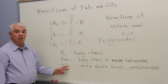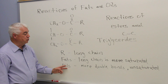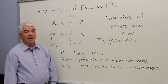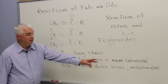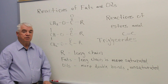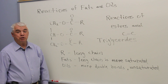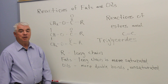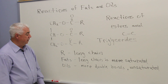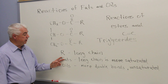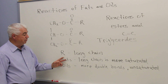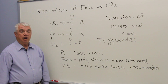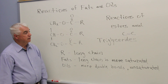Oils, of course, are liquids at room temperature. They have more double bonds — more unsaturation, or less saturation. Saturated means CH₂, CH₂ kinds of groups, whereas unsaturated implies that there's a double bond present. Fats are typically associated with animal sources — beef fat, pig fat, and so forth — while oils are associated with plant origins.